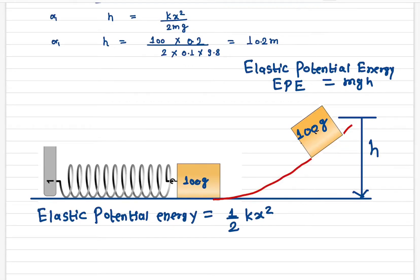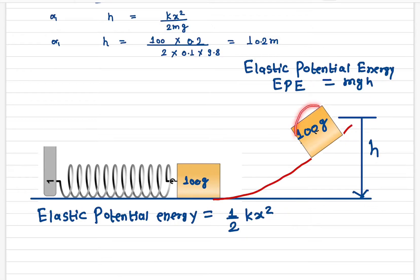The question is: how high will this mass move up on this inclined plane or ramp? The only thing you need to know is the conservation of energy. Here, all the energy is in the form of elastic potential energy, and at the top, all the energy will be in the form of gravitational potential energy. Remember, the total energy at any point is exactly the same.